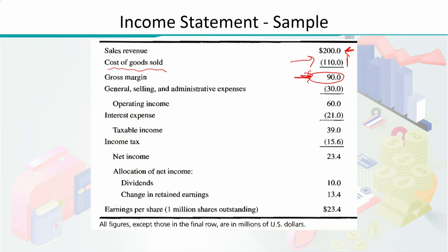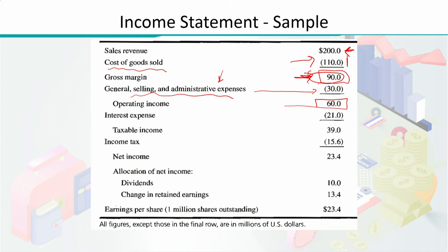In order to find the operating income from the gross margin, we need to subtract the general, selling, and administrative expenses — that is, salaries paid to managers and overall marketing expenses — which suppose turned out to be 30 million dollars. Negative values are shown in parentheses. From the gross margin of 90 million, subtracting GS&A expenses gives an operating income of 60 million dollars.